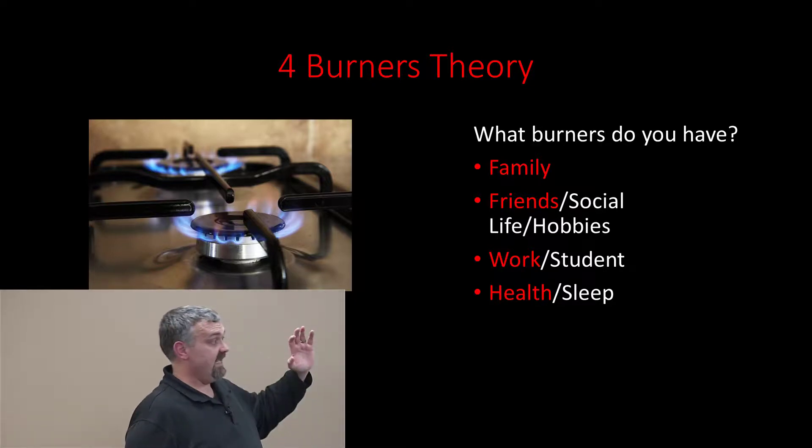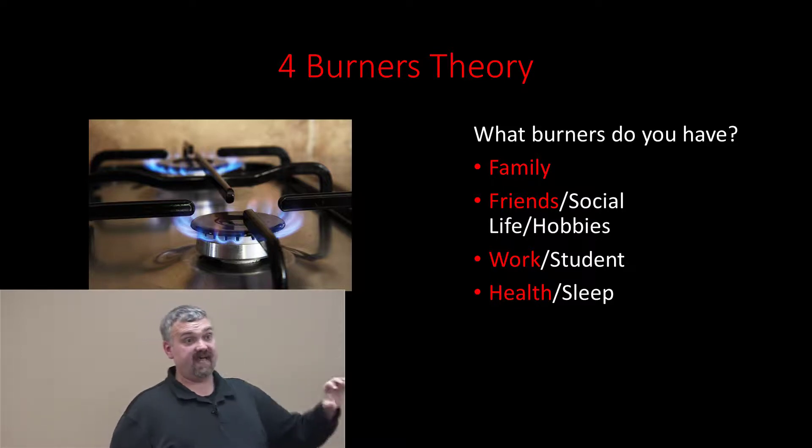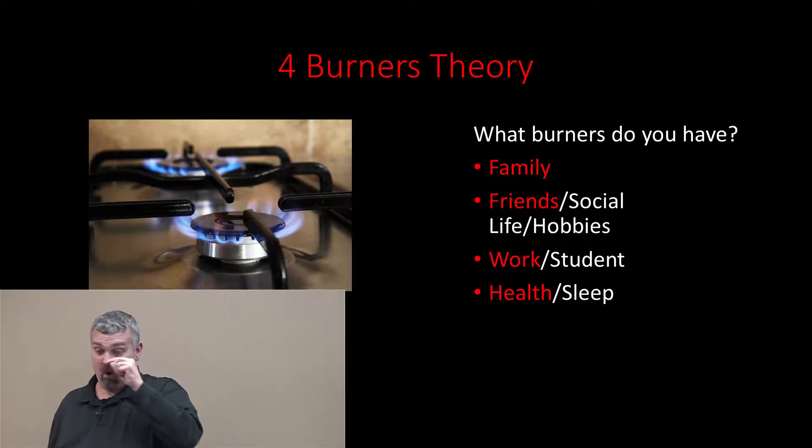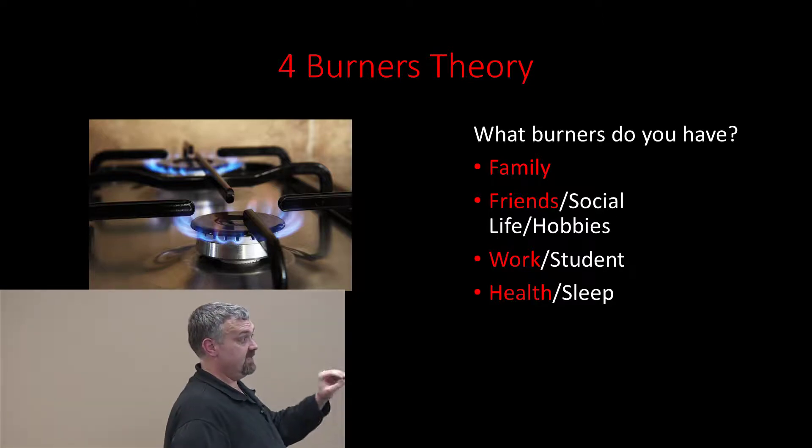So basically, if you want to be good at something, one of these burners has to be turned down. And if you want to be really good at something, two of these burners have to be turned down. That's the four burners theory. You have family, friends, work, and health. If you want to be good, turn down one. If you want to be great, turn down two.